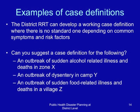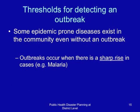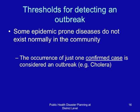Some epidemic-prone diseases exist in the community even without an outbreak — malaria is an example, prevalent in many parts of Eastern Africa. For an outbreak to be declared, there must be a sharp rise in cases beyond the expected threshold. Some epidemic-prone diseases do not exist normally in the community; the occurrence of just one confirmed case is considered an outbreak — an example is cholera.